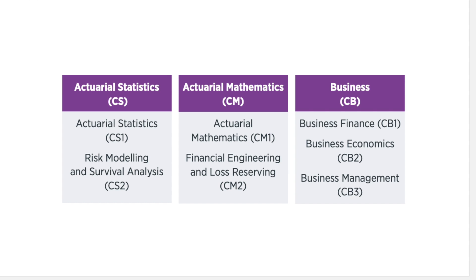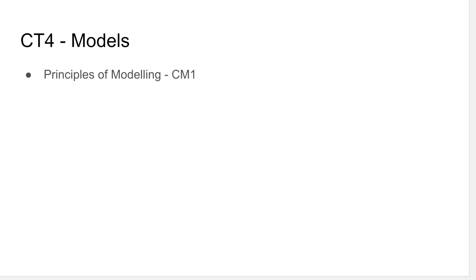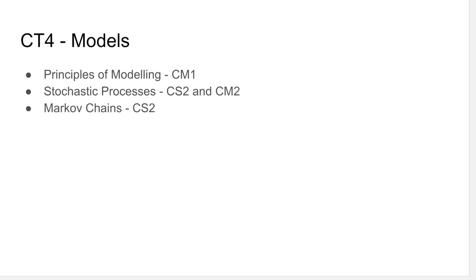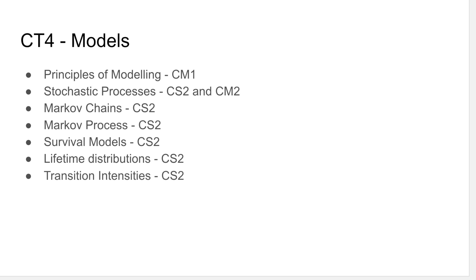What I want to talk about is CS2, risk modeling and survival analysis. Looking at the old CT4 syllabus, we had principles of modeling — that's been moved to CM1, which is the combination of CT1 and CT5. Stochastic processes, Markov chains, and Markov processes have all moved to CS2, and stochastic processes also appear in CM2. Survival models, lifetime distributions, transitional intensities, and graduation have also moved to CS2 — so we're seeing the bulk of CT4 move there, except the first chapter.